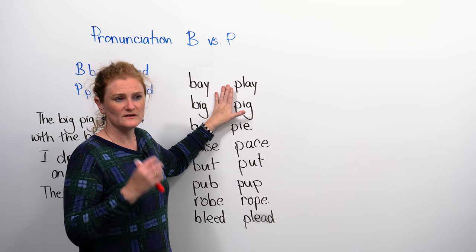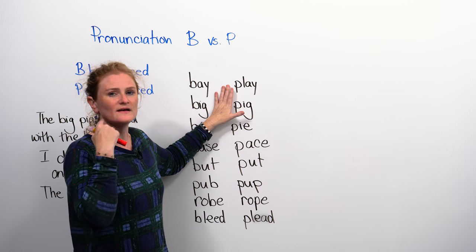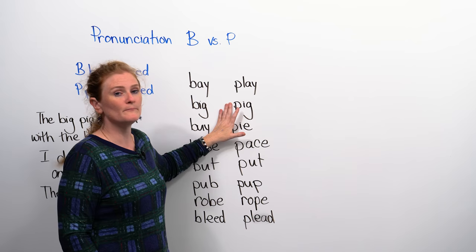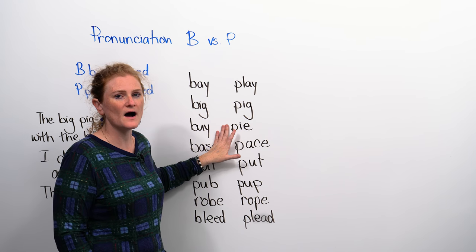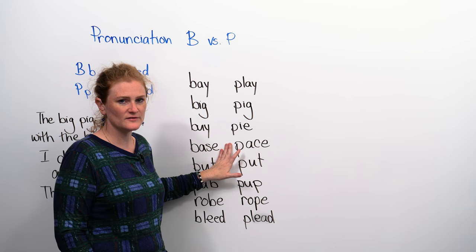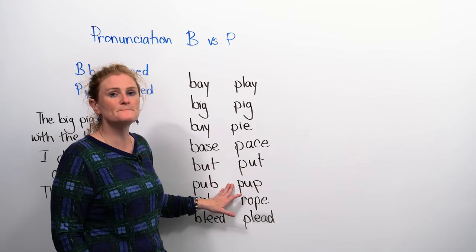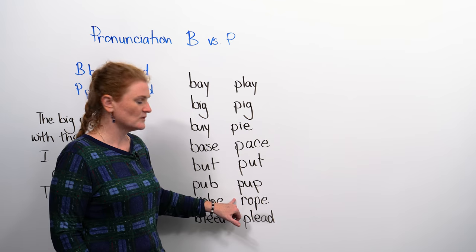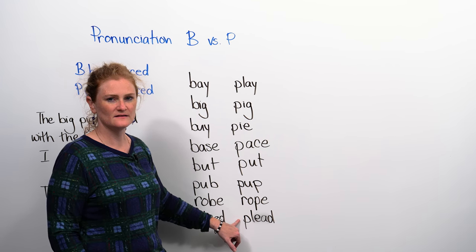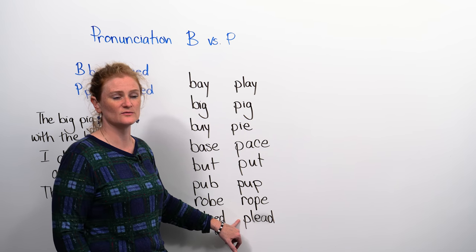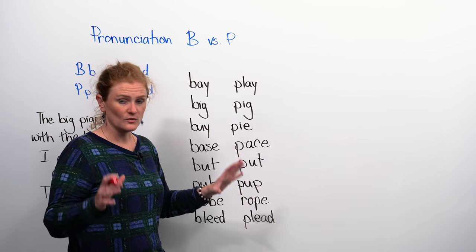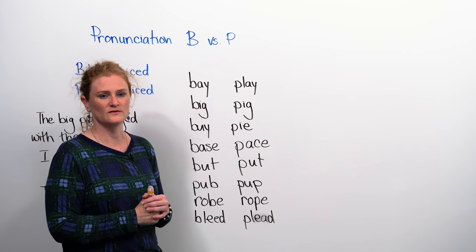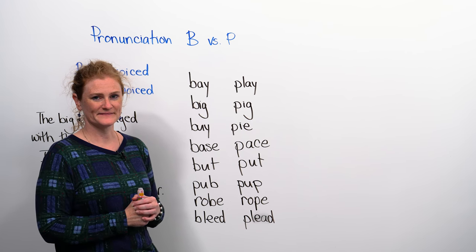When we say the P, we don't have to vibrate or move our vocal cords. It's more like you're blowing out air, so we have play, pig, pie, pace, put, pup. Now this, we have double P, so it's pup. Rope, and then plead. This one's a little bit difficult because you've got to get the L as well, so it's plead. So I would like you to now practice the P sound. Remember, do not vibrate your vocal cords when you do this.